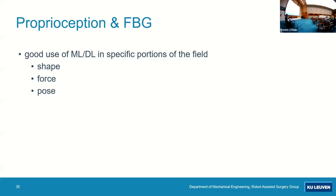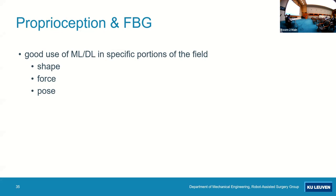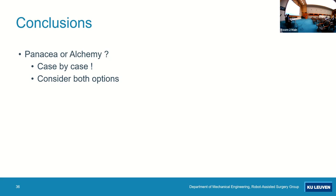Overall, we can find good uses of ML and DL in specific portions of the field for shape, force, and pose. Whether it's a panacea or alchemy, I think it's case by case. From now on we consider both options. I think it's scientifically valuable to explore that and compare and learn which works better when. Alchemy can lead to good results but doesn't generalize well. So in safety critical situations, if we use machine learning, we'll always use model-based next to it as a monitor. If there's a large discrepancy, we'll inform our clinician and start the safety procedure.